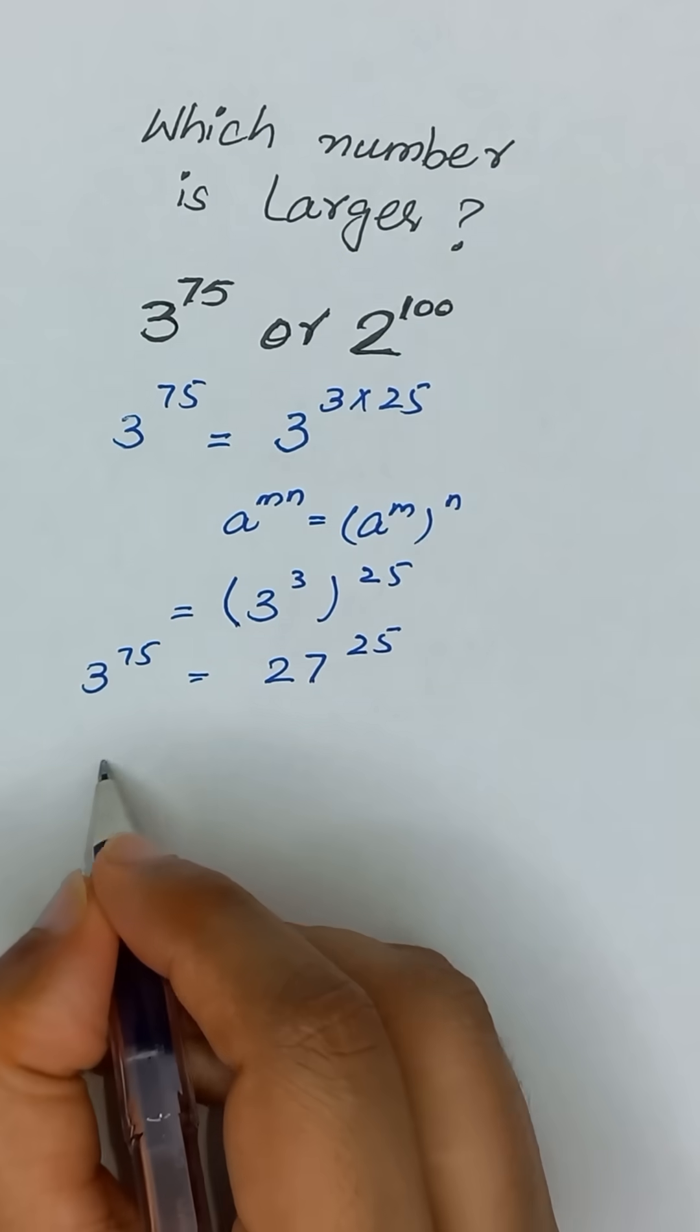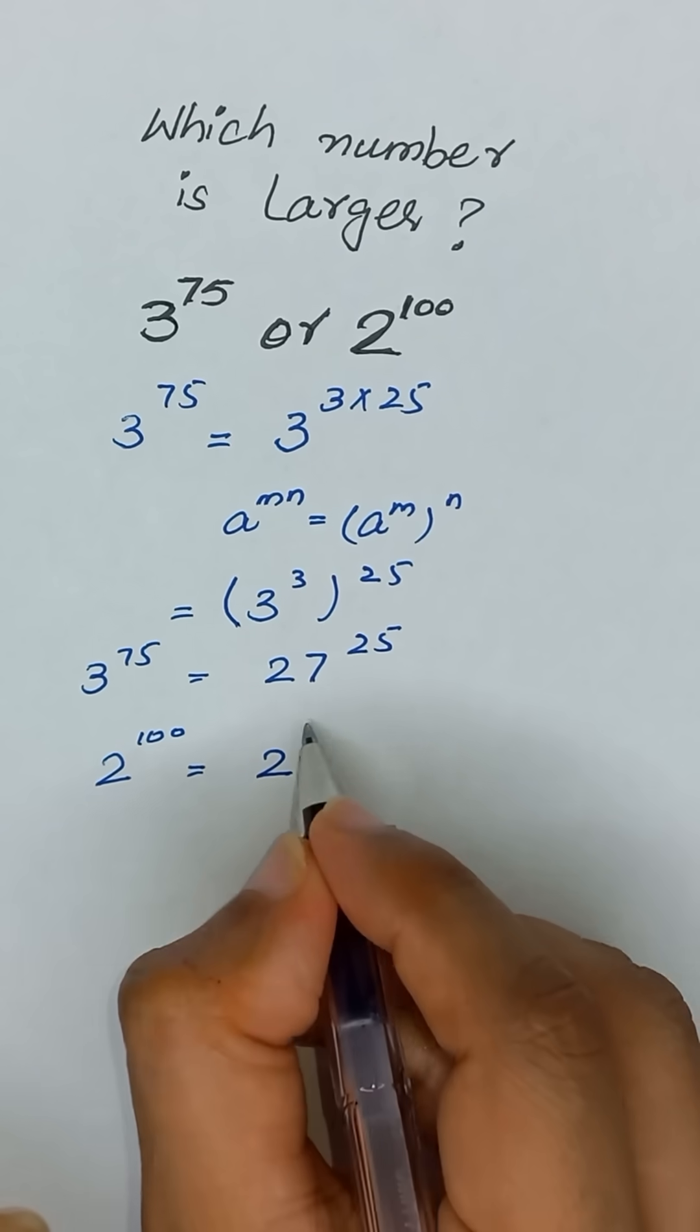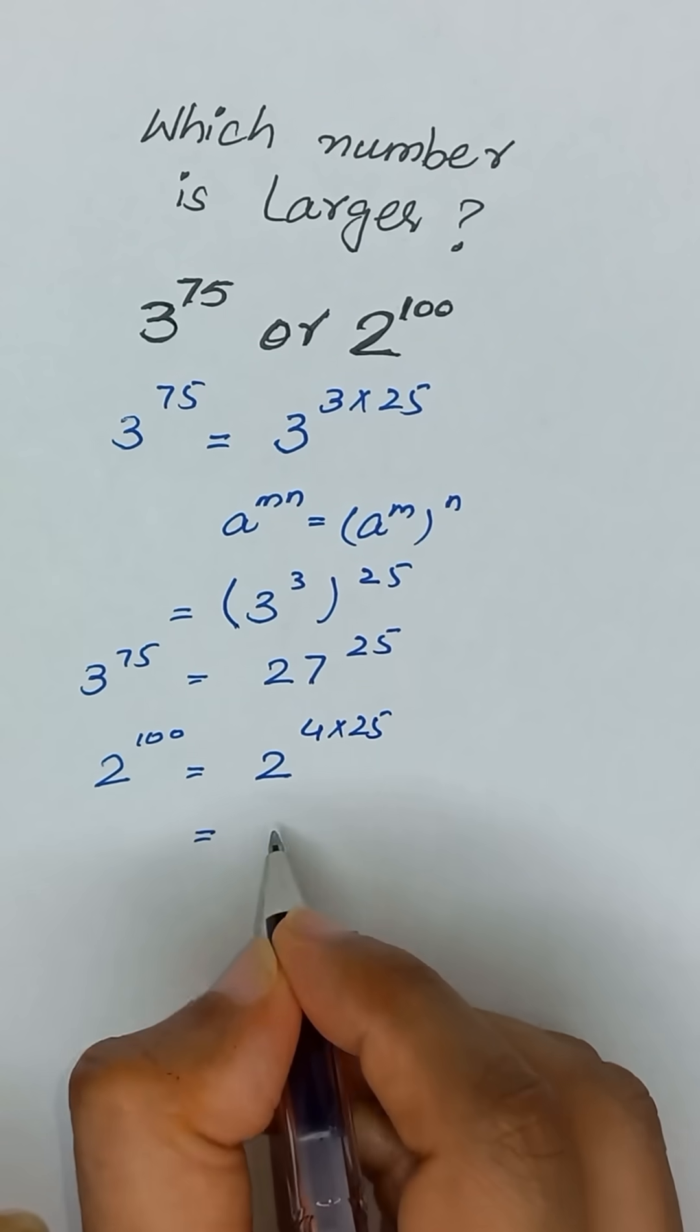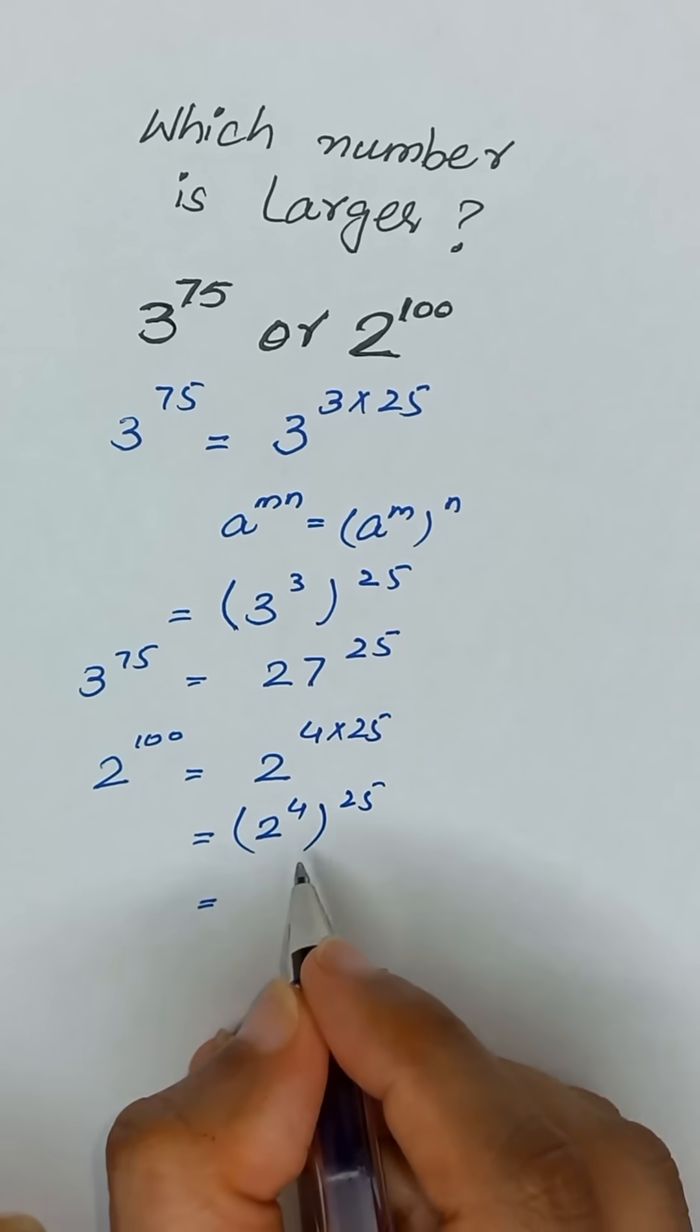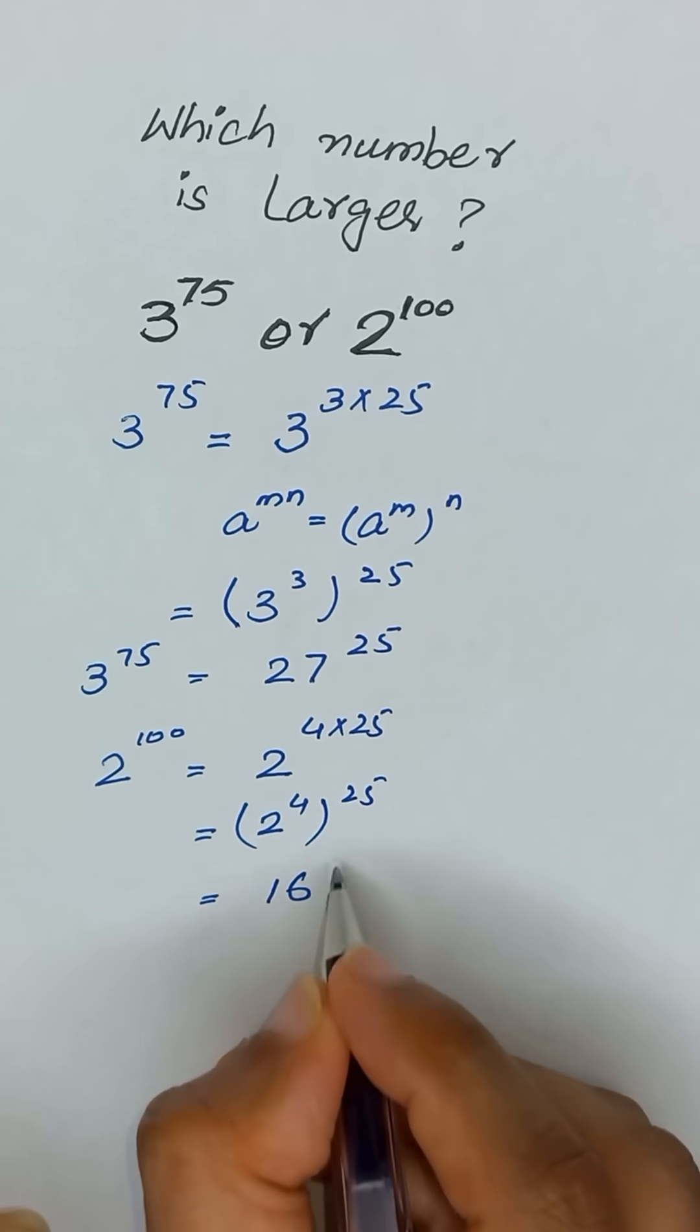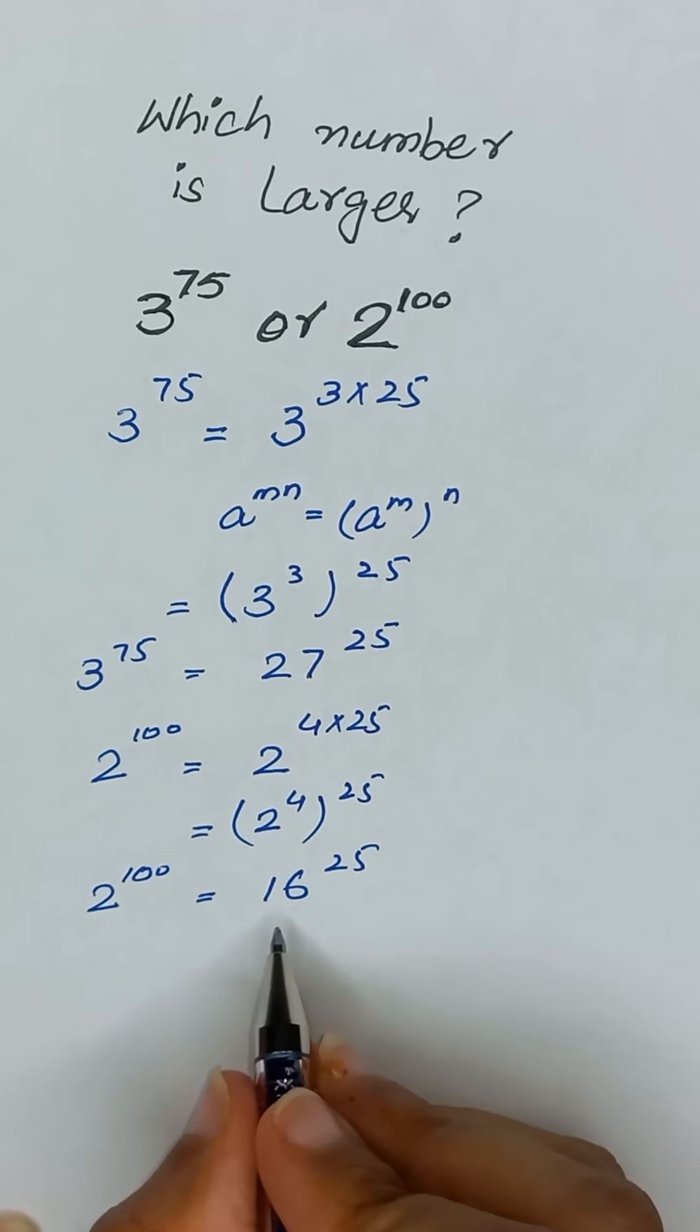Now here we have 2 to the power 100. Similarly, we can write 2 to the power 100 as 4 times 25, so it will become 2 to the power 4, and its power 25. 2 to the power 4 is same as 16, so 2 to the power 100 is equal to 16 to the power 25.